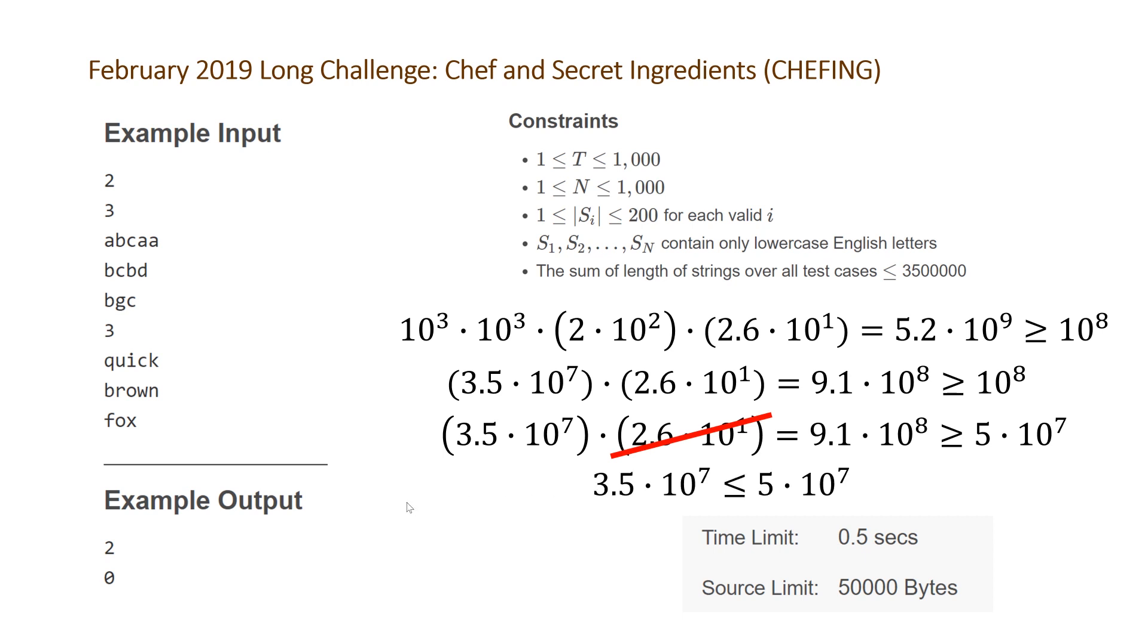If we do that, we end up with 3.5×10^7 just being less than 5×10^7, which given the time limit and our 10^8 rule of thumb just meets what we're looking for. The details in terms of the constraints and the time limit almost tell us exactly what the time complexity they're looking for is.